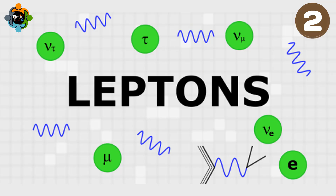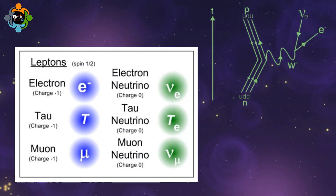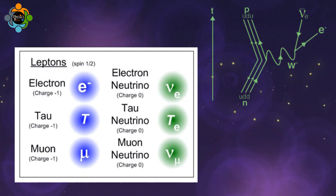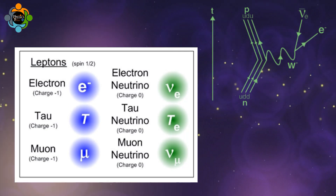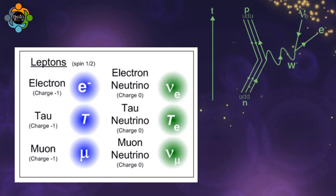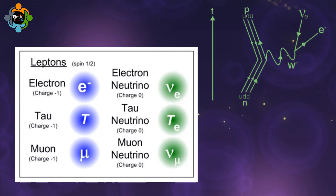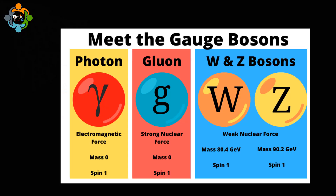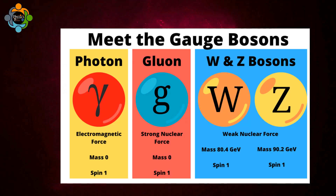Number two: leptons. These include familiar faces like electrons, as well as their heavier cousins muons and taus. Each comes with its own neutrino sidekick. Number three: bosons. These particles are like the cosmic delivery service — gluons carry the strong force, photons deliver the electromagnetic force, and W and Z bosons handle the weak force.